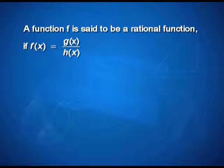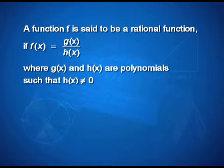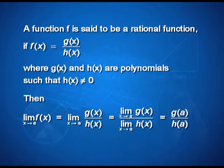A function f is said to be a rational function if f(x) equals g(x) upon h(x), where g(x) and h(x) are polynomials such that h(x) is not equal to 0. Then limit of f(x) as x tends to a equals limit of g(x) upon h(x) as x tends to a, which equals limit of g(x) as x tends to a upon limit of h(x) as x tends to a, which equals g(a) upon h(a). Now let us solve some examples to understand this.